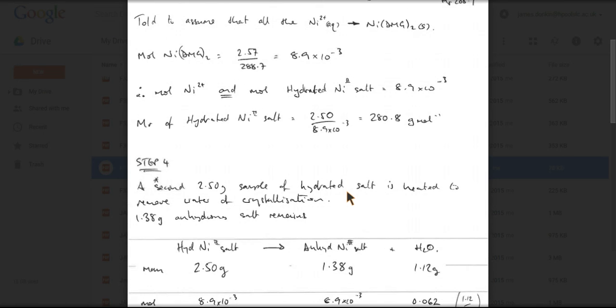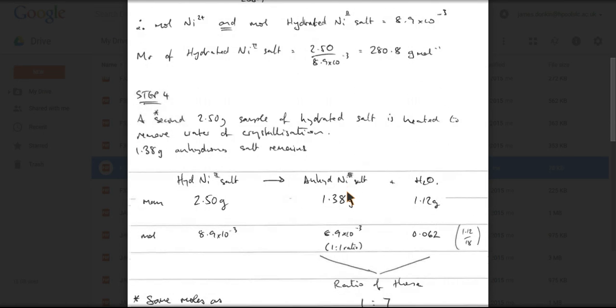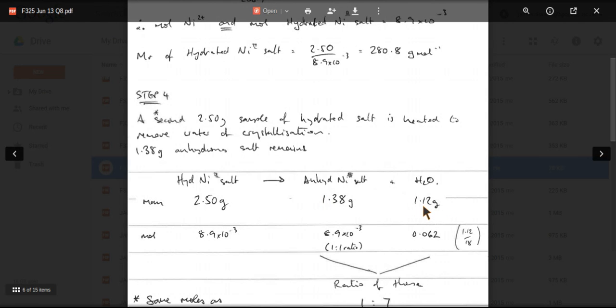So where can we go with this? Well, we know that the hydrated nickel 2 salt has a mass of 2.5 grams. So if we've got 1.38 grams of nickel 2 salt remaining - that's supposed to be a Roman 2 there, it looks like a hashtag - and therefore the mass of water that's been removed is obviously the difference. So 1.38 taken away from 2.5 gives you 1.12 grams.